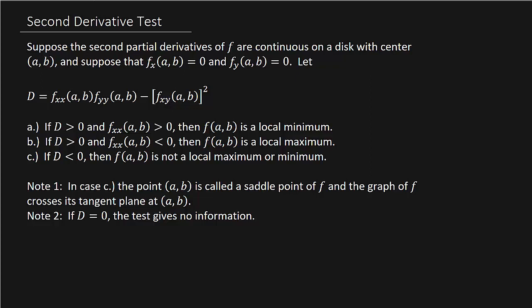In this video we're going to look at finding local max and min for functions in two variables. We're going to use the second derivative test. Suppose the second partial derivatives of f are continuous on a disk with center ab, and suppose that...